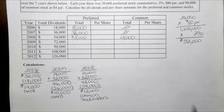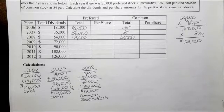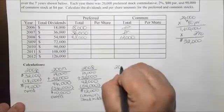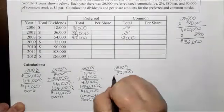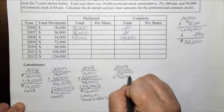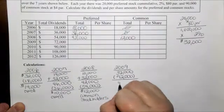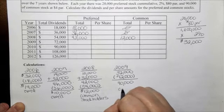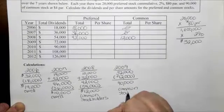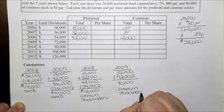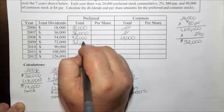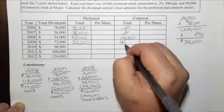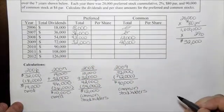At this point we owe no more balances to the preferred stockholders. In 2009, the preferred stockholders should receive $32,000, and a total of $72,000 was paid out in dividends, so $40,000 goes to the common stockholders. So $32,000 to the preferred and $40,000 to the common stockholders.